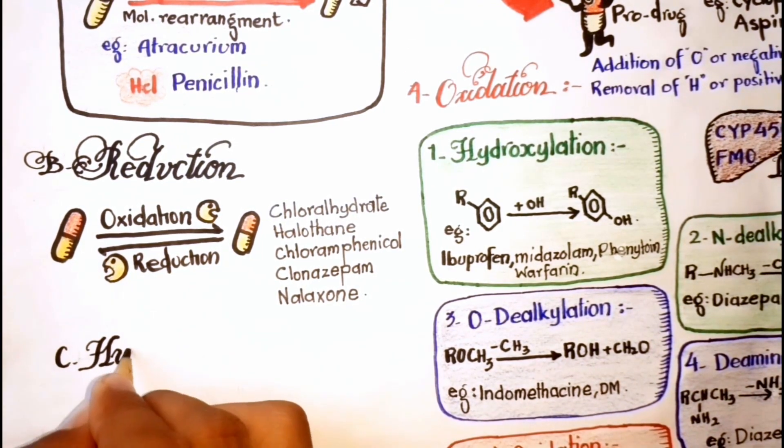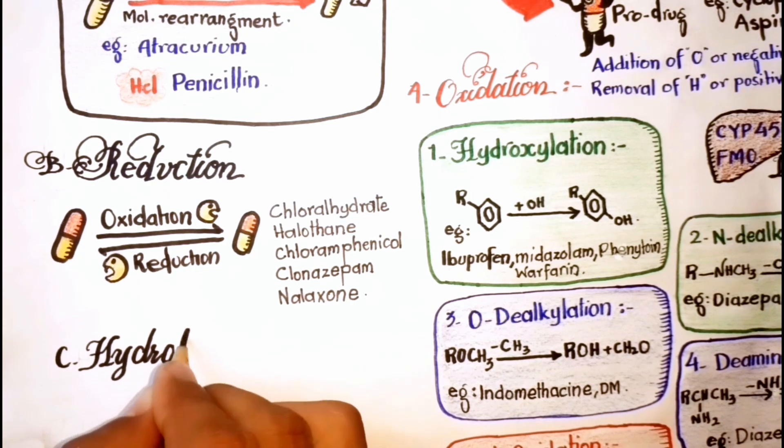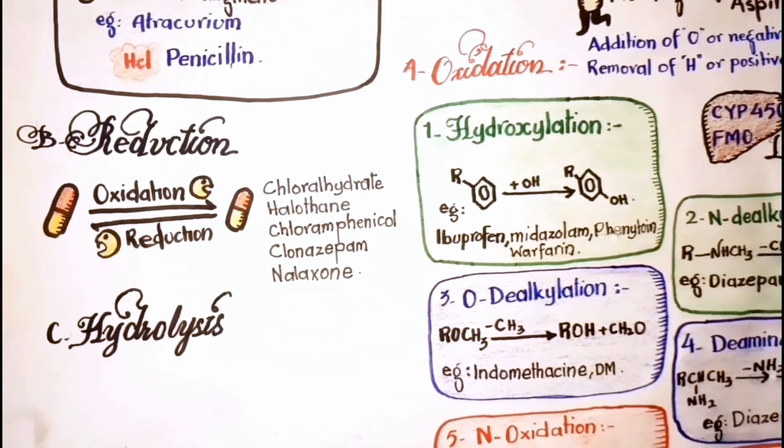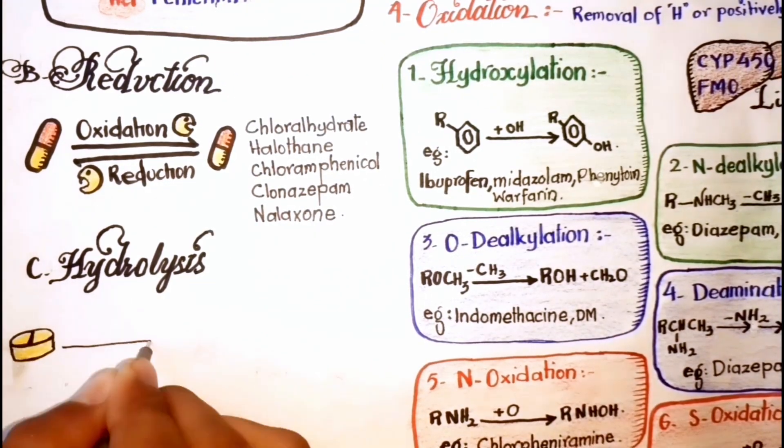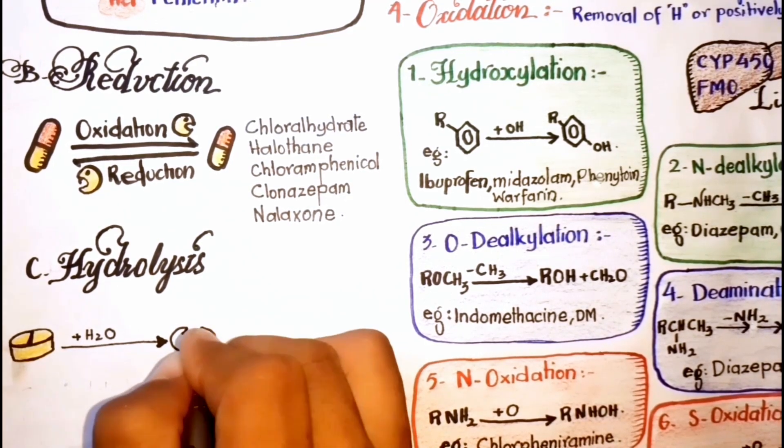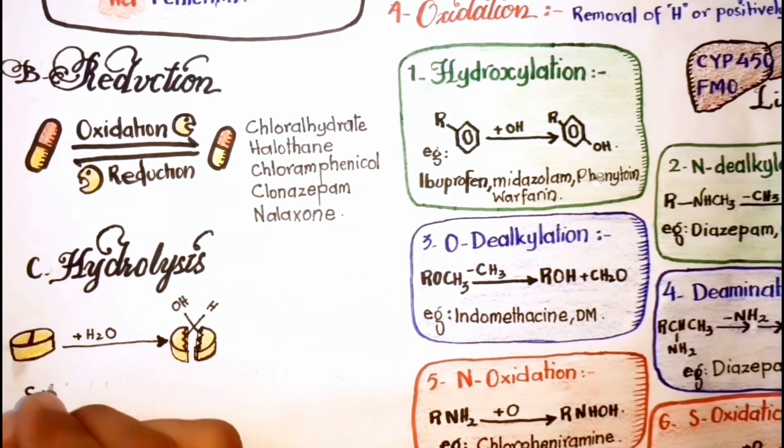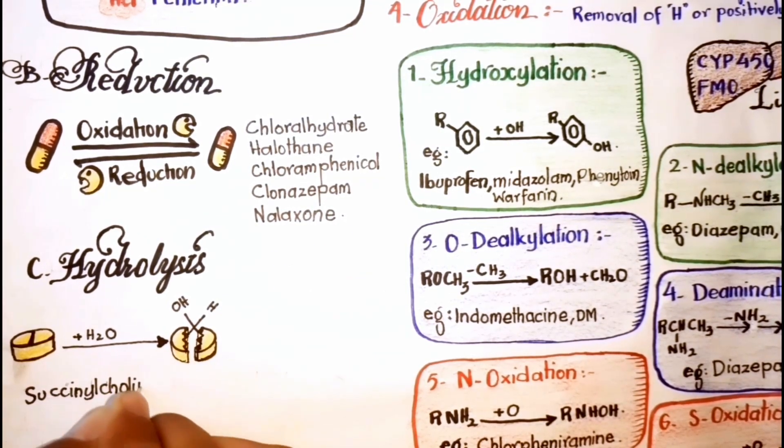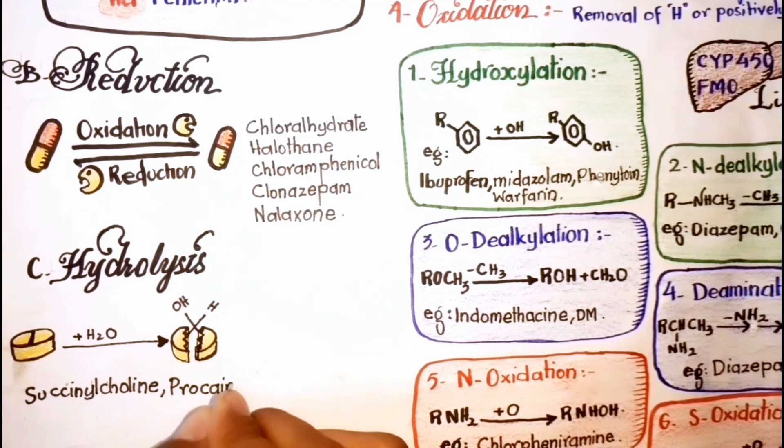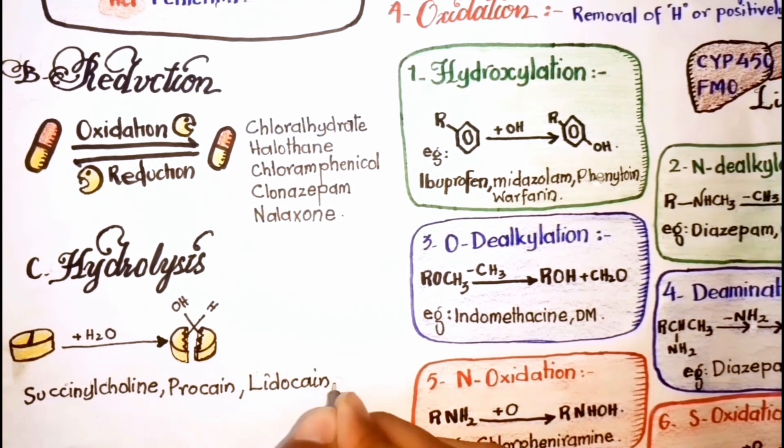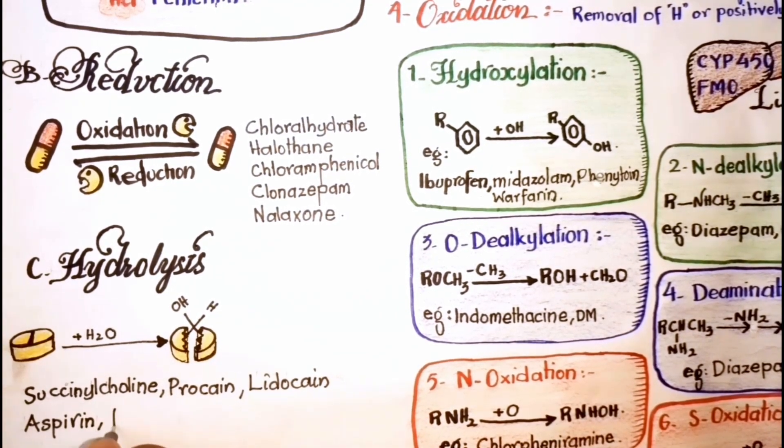Third type of phase 1 reaction is hydrolysis. This is the breakdown of drug molecule by taking off a molecule of water. Examples of hydrolyzed drugs are succinylcholine, procaine, lidocaine, aspirin, and indomethacin.